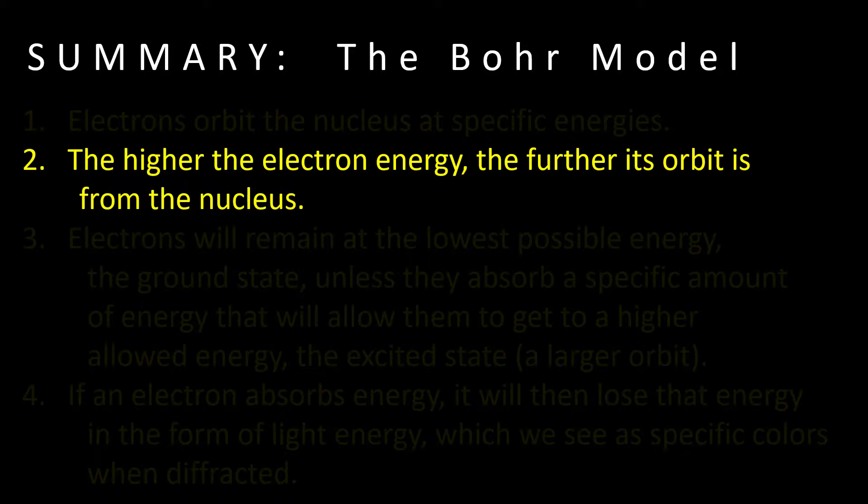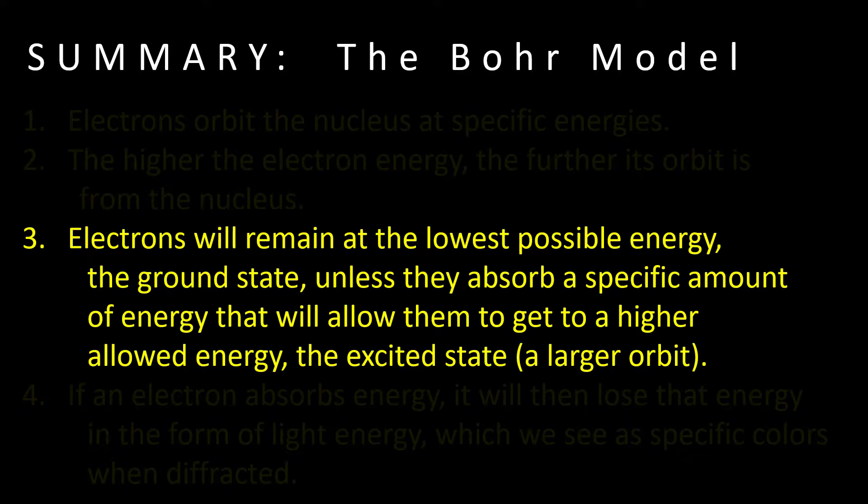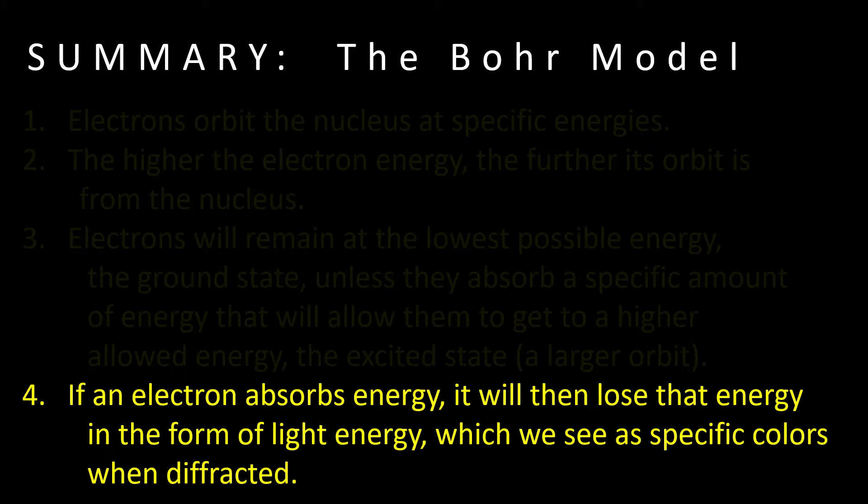In summary, electrons orbit the nucleus at specific energies. The higher the electron energy, the further its orbit is from the nucleus. Three, electrons will remain at the lowest possible energy, the ground state, unless they absorb a specific amount of energy that will allow them to get to a higher allowed energy called the excited state, which is a larger orbit. Four, if an electron absorbs energy, it will then lose that energy in the form of light energy, which we see as specific colors when diffracted.